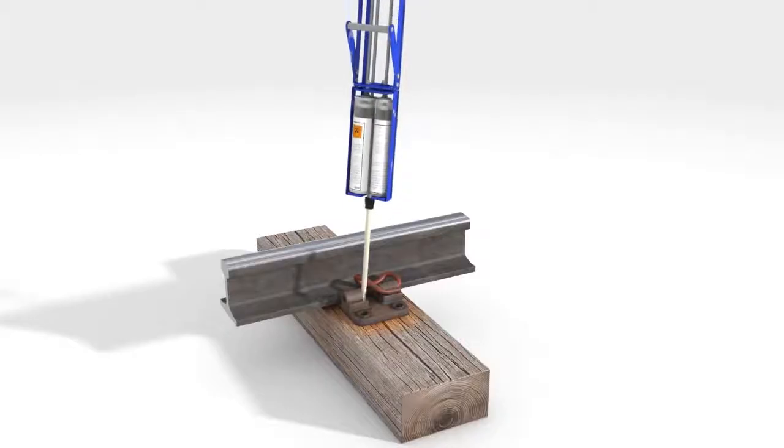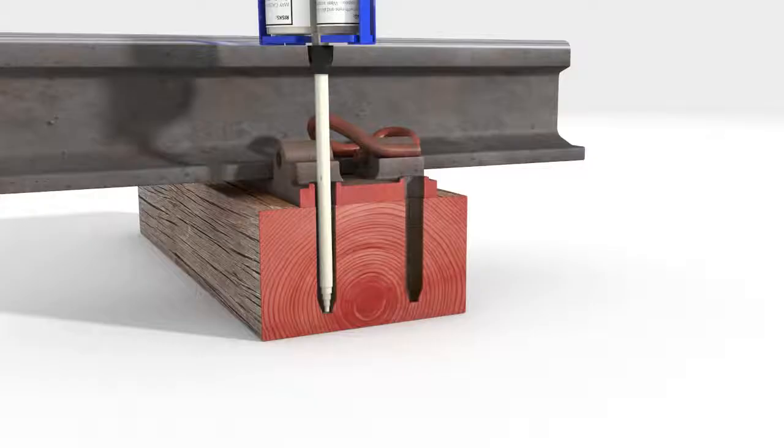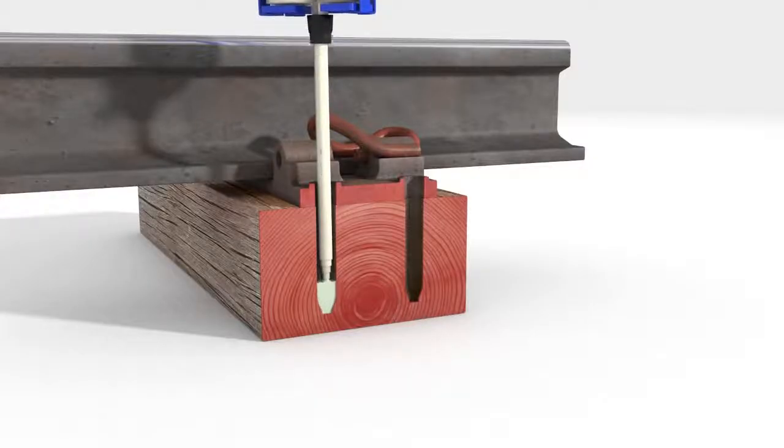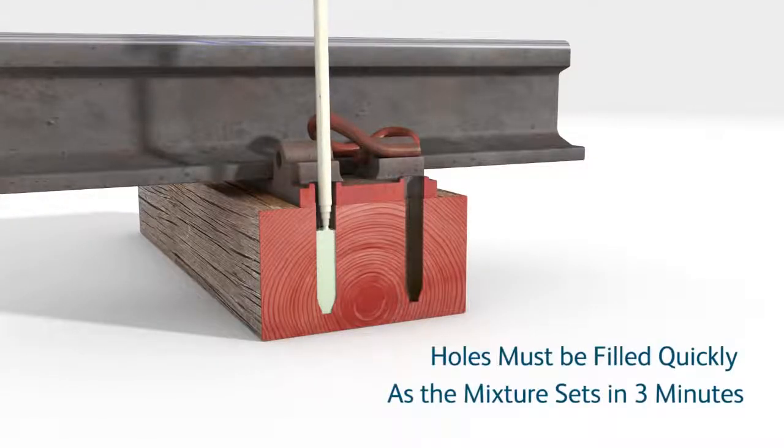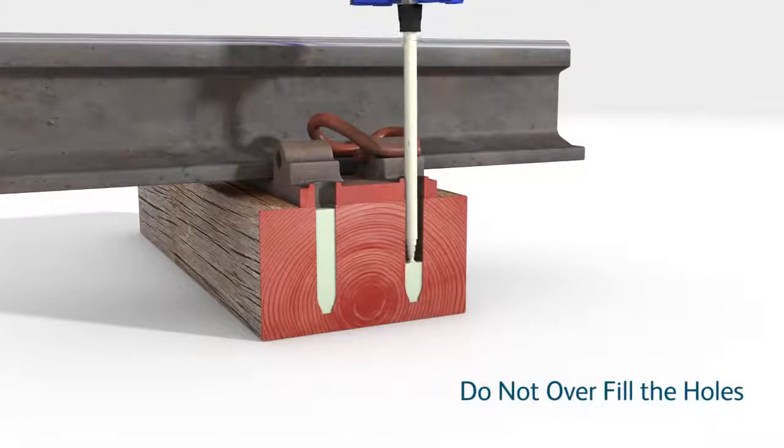Insert the mixing tube into the bottom of the hole and start to fill the screw hole from the bottom upwards, lifting the mixing tube as you fill. The holes must be filled quickly, one after the other, as the material sets in 3 minutes. Do not overfill the holes.